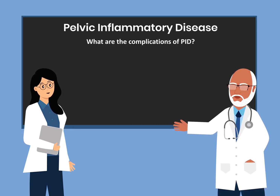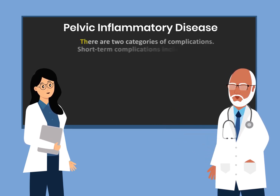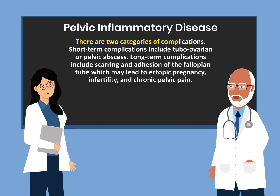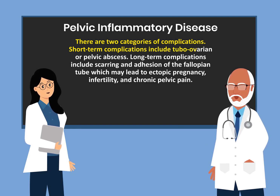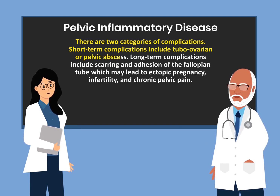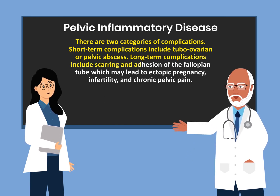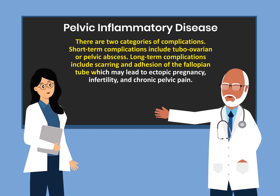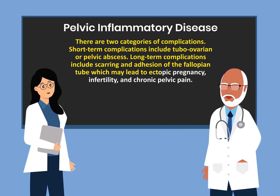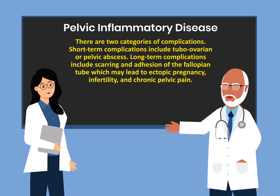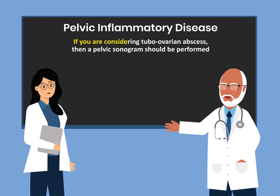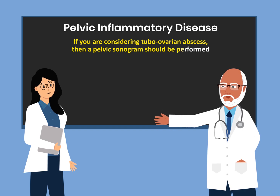What are the complications of PID? There are two categories of complications. Short-term complications include tubo-ovarian or pelvic abscess. Long-term complications include scarring and adhesion of the fallopian tube, which may lead to ectopic pregnancy, infertility, and chronic pelvic pain. If you are considering tubo-ovarian abscess, then a pelvic sonogram should be performed.